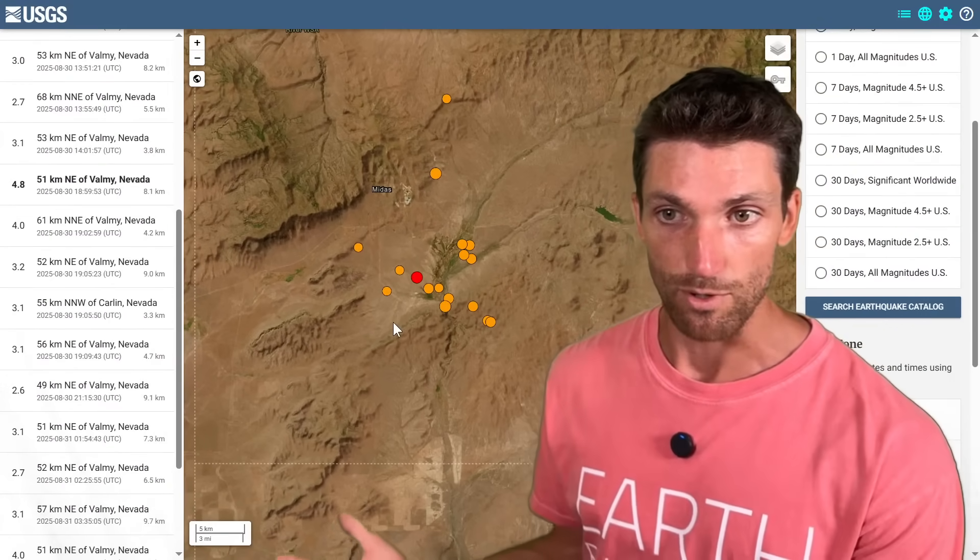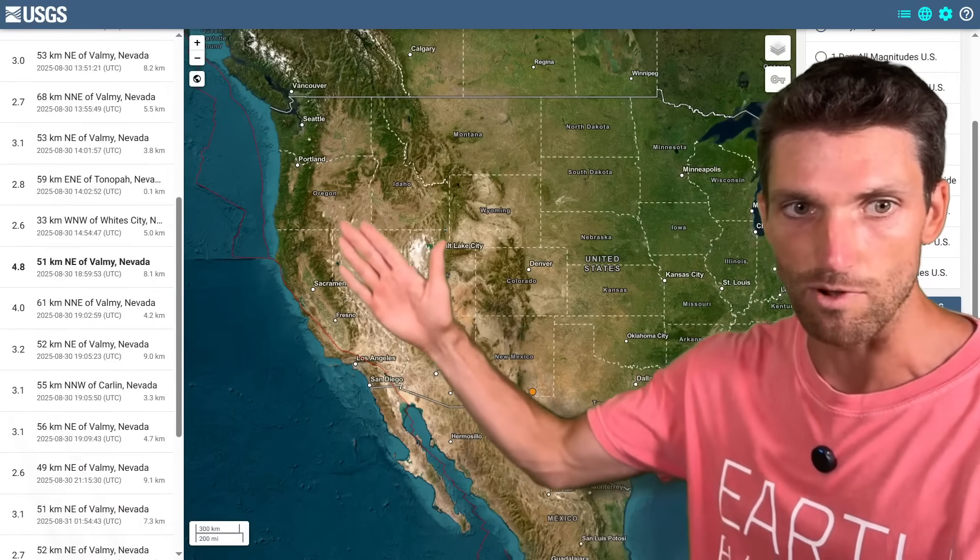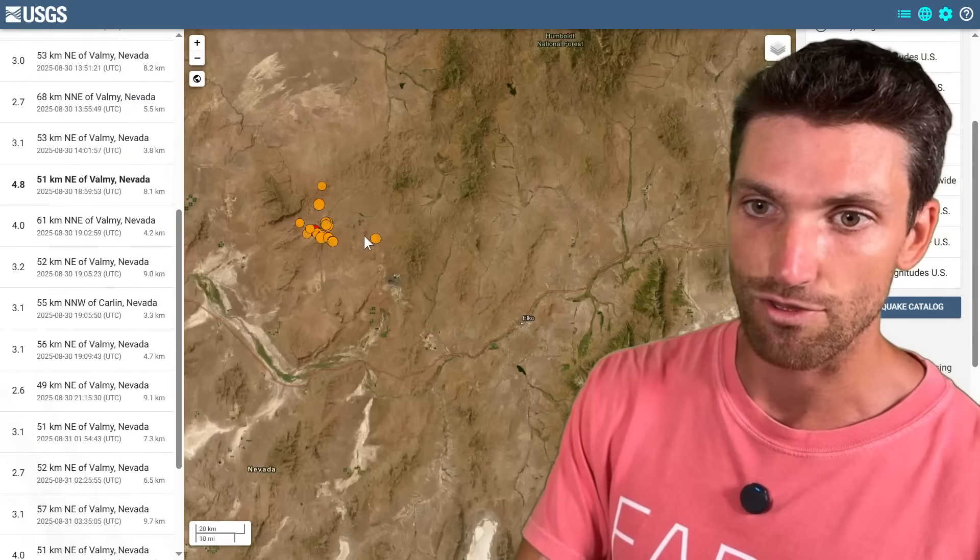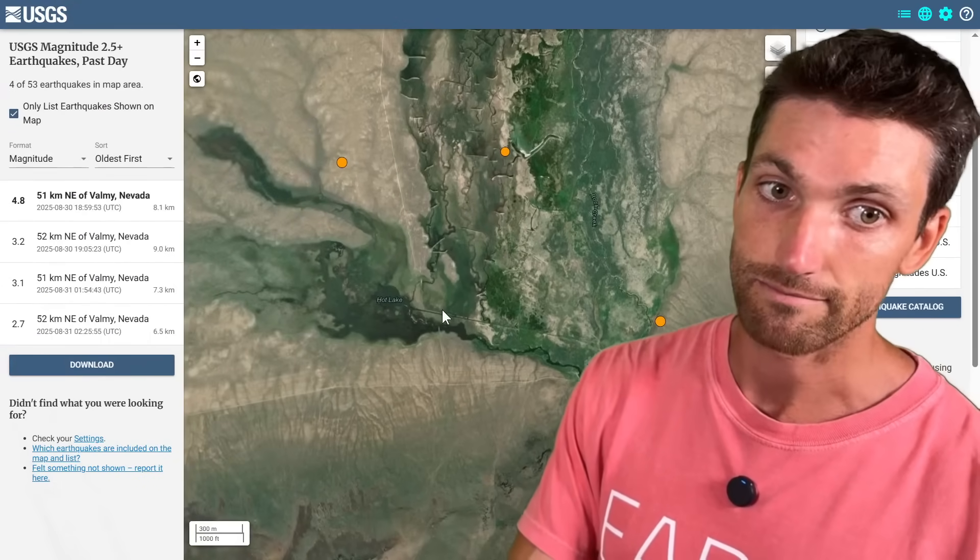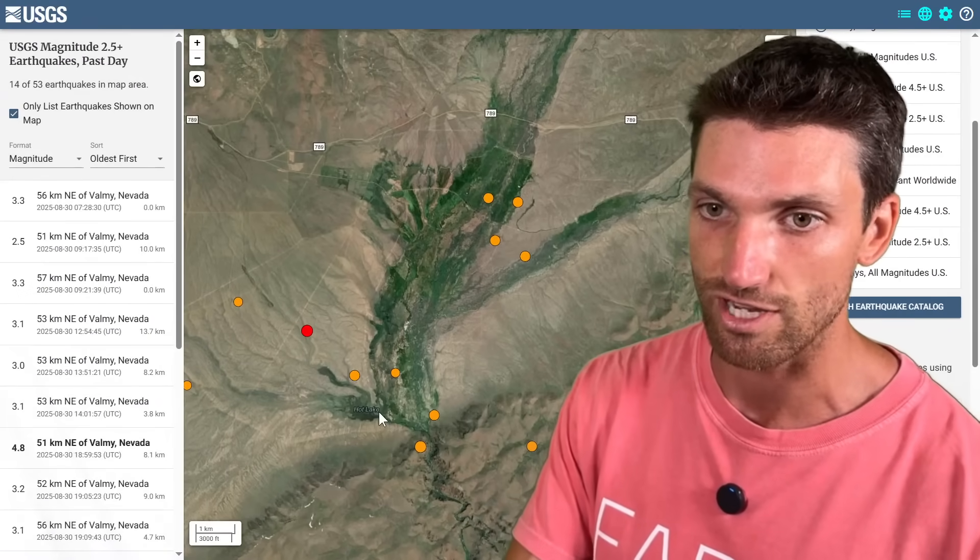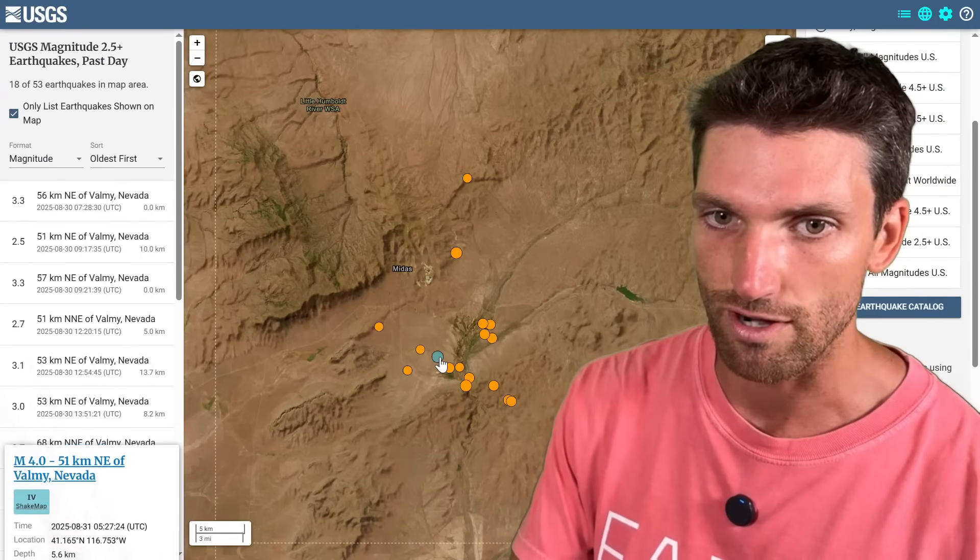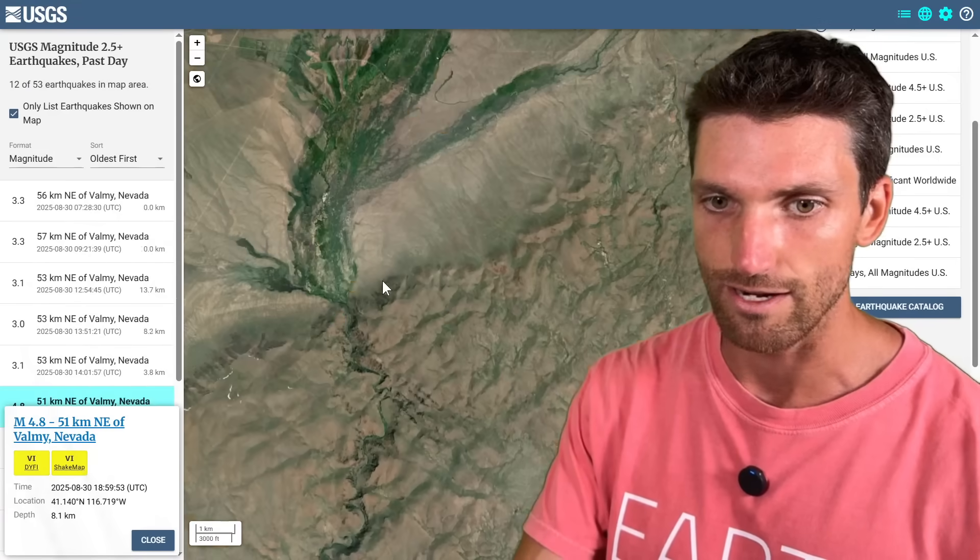But here's this earthquake burst in Nevada. Let me pull out so you can see the United States. Most activity is usually around California. This is in this hydrothermal field here and so there's a place called Hot Lake nearby that tells you something. When I was checking this out I'm like there must be hydrothermal here. Then you have Midas right there and the strongest earthquake there being a magnitude 4.8 right here.